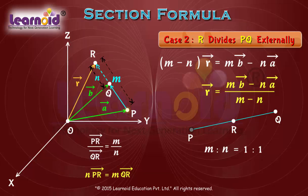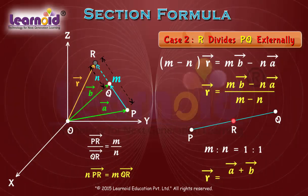If R divides line segment PQ in two equal halves, then the vector r is given by vector a plus vector b by 2.